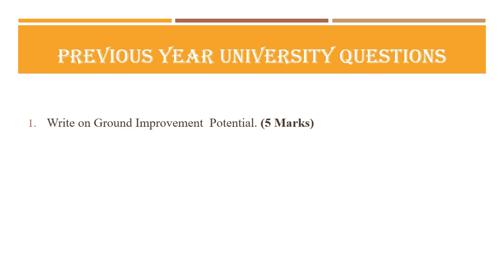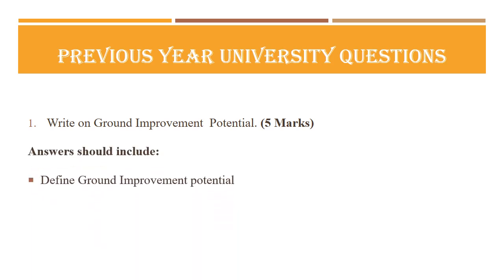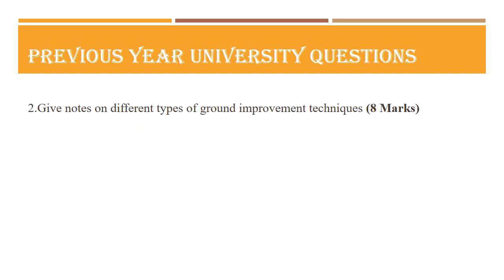The first question is on ground improvement potential, asked for five marks. Your answer should include a definition of ground improvement potential and a brief explanation of the three different types of ground conditions: hazardous ground conditions, poor ground conditions, and favorable ground conditions.